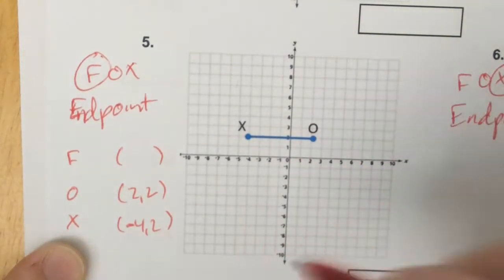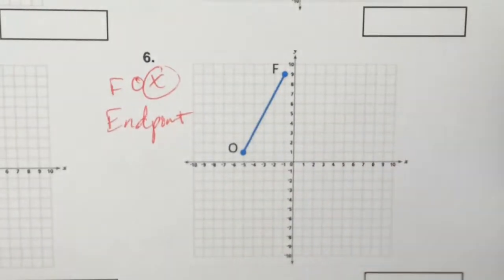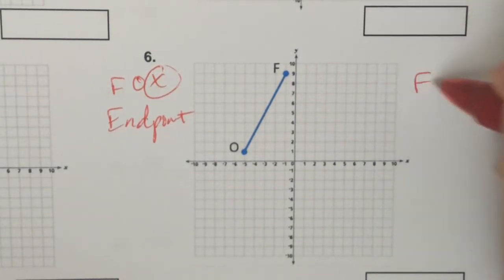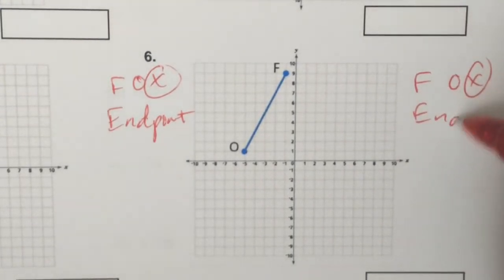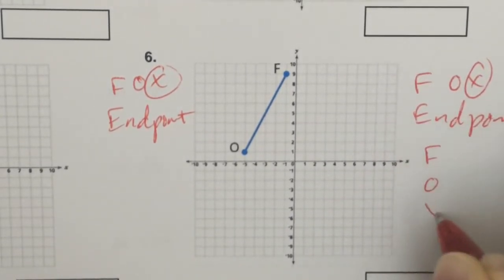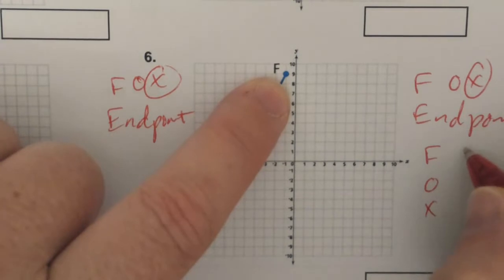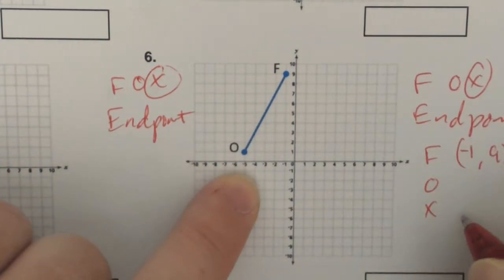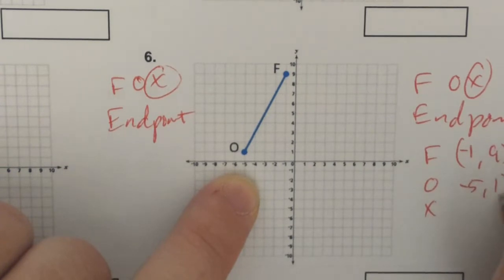We're going to be looking for the pattern. And for number 6 — F, O, X, looking for X, endpoint. F was negative 1, 9 and O was negative 5, 1. Pause the video and go find those answers.